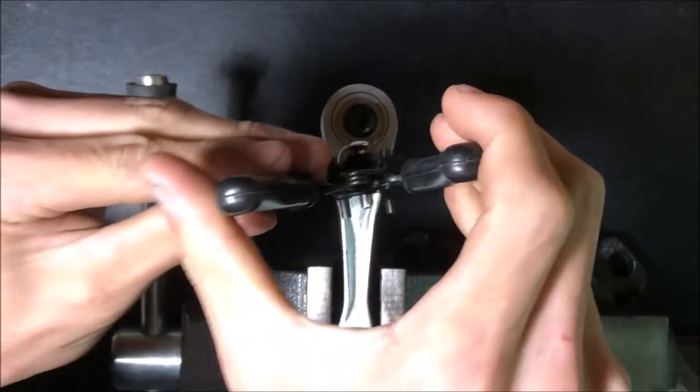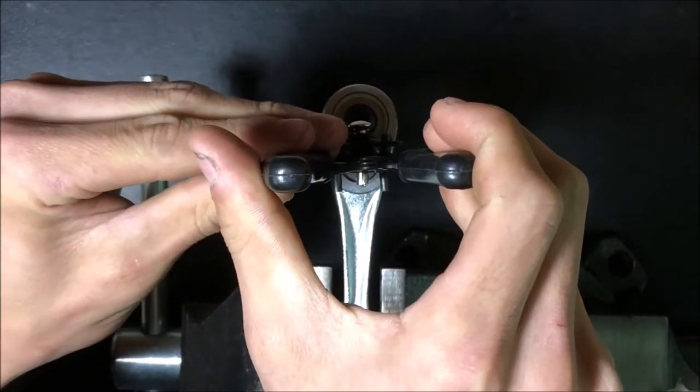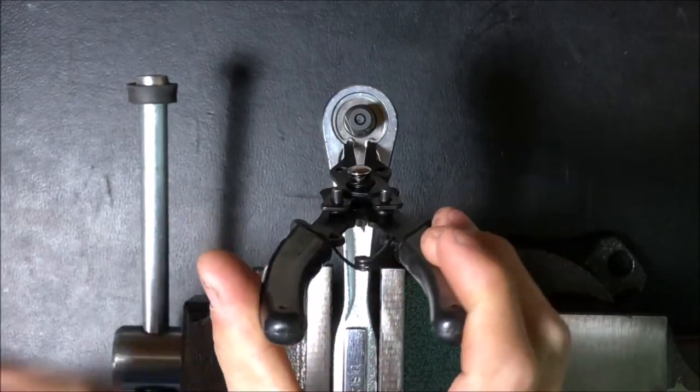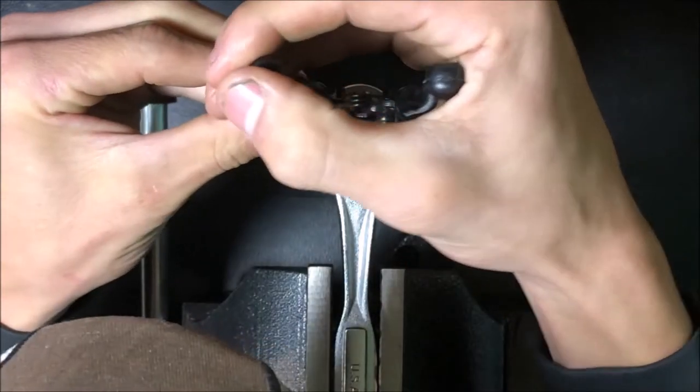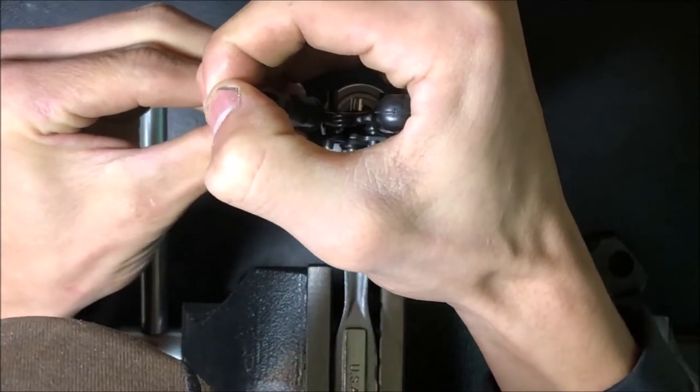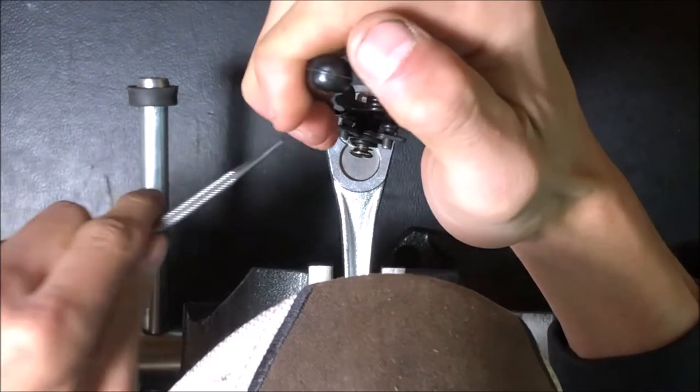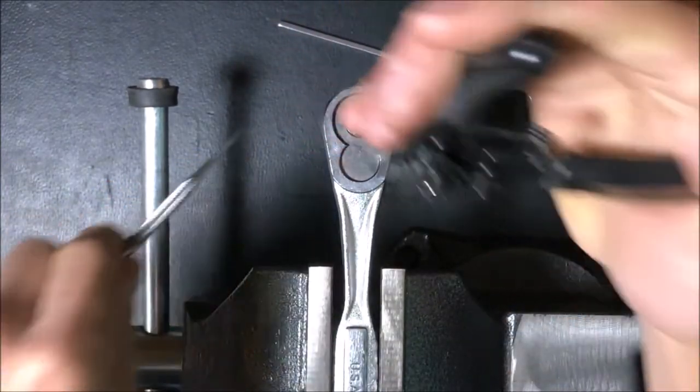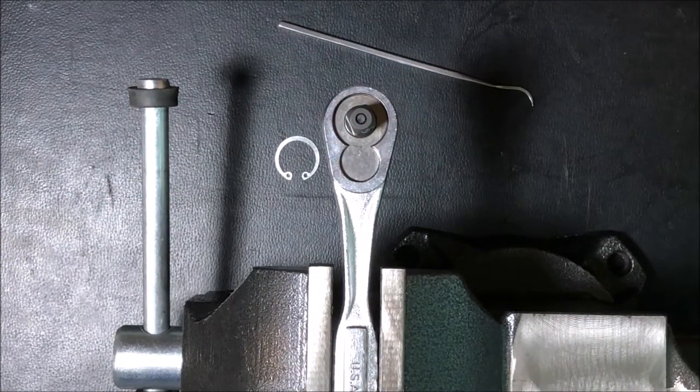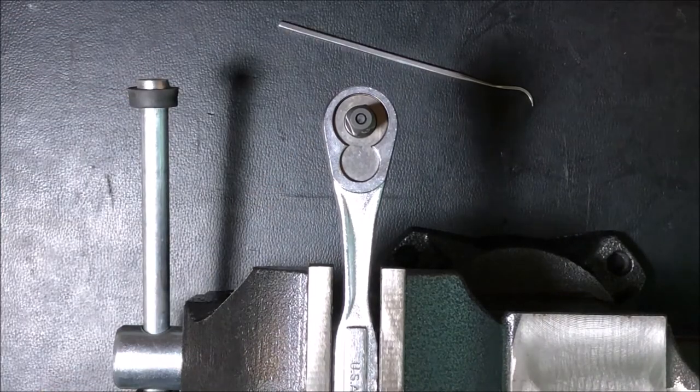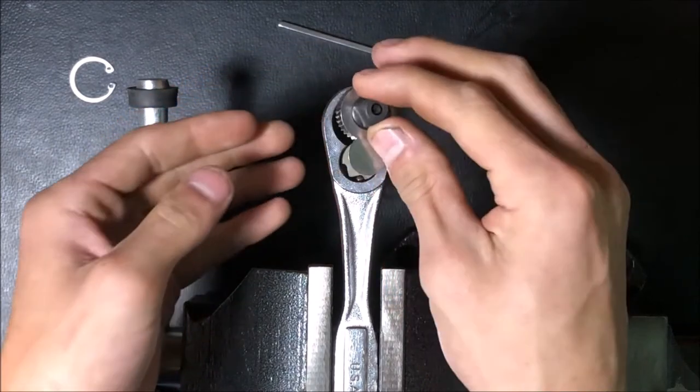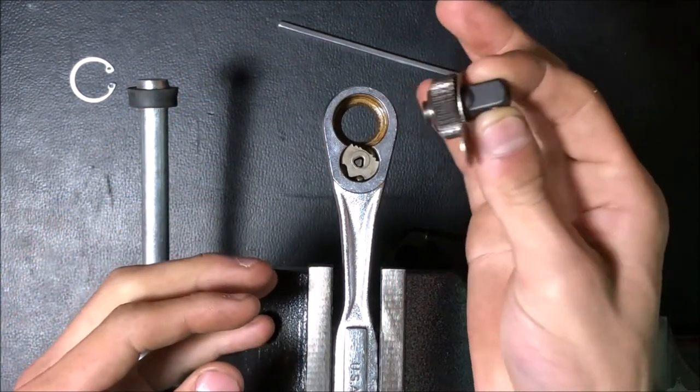Use a pair of snap ring pliers and stick them inside the hole. What you're going to do is compress the snap ring on the inside. Okay, snap ring finally out. So, the first thing is to remove the snap ring and this whole piece comes out as one unit.